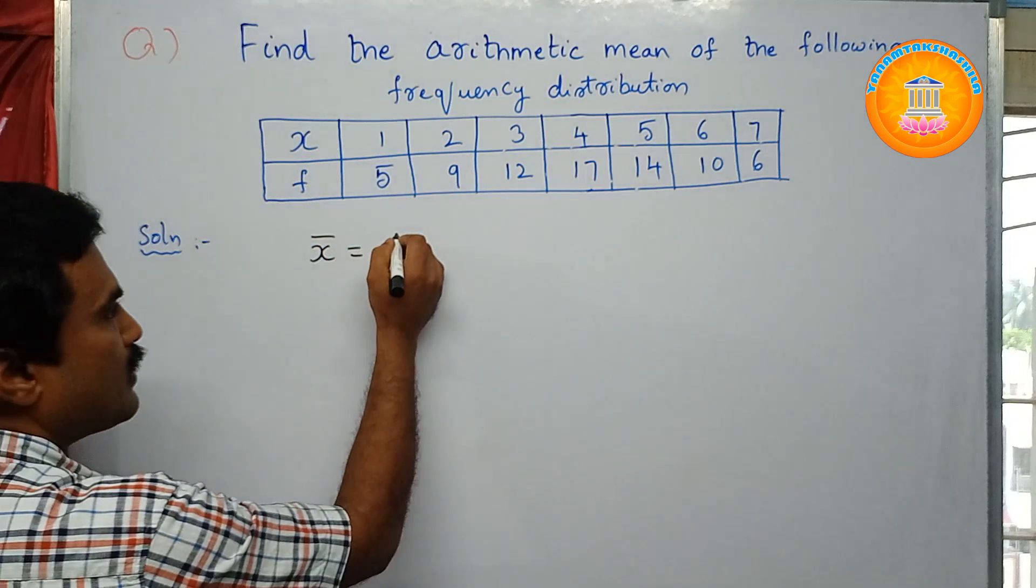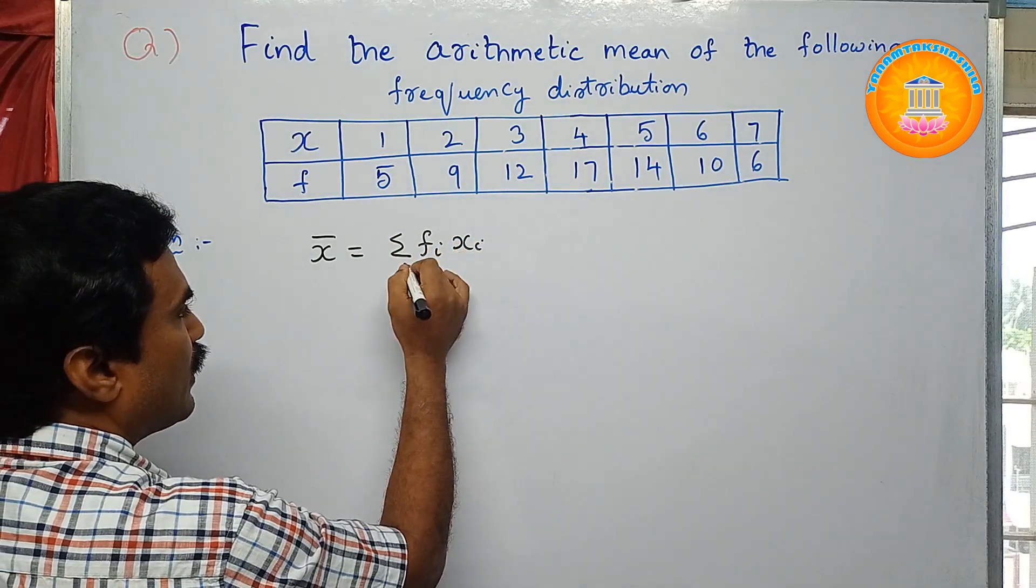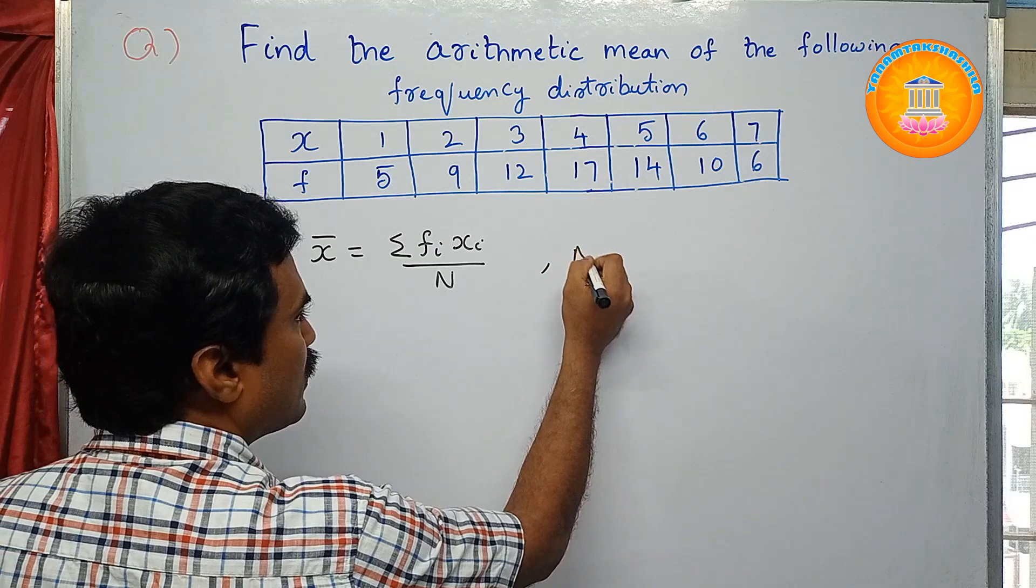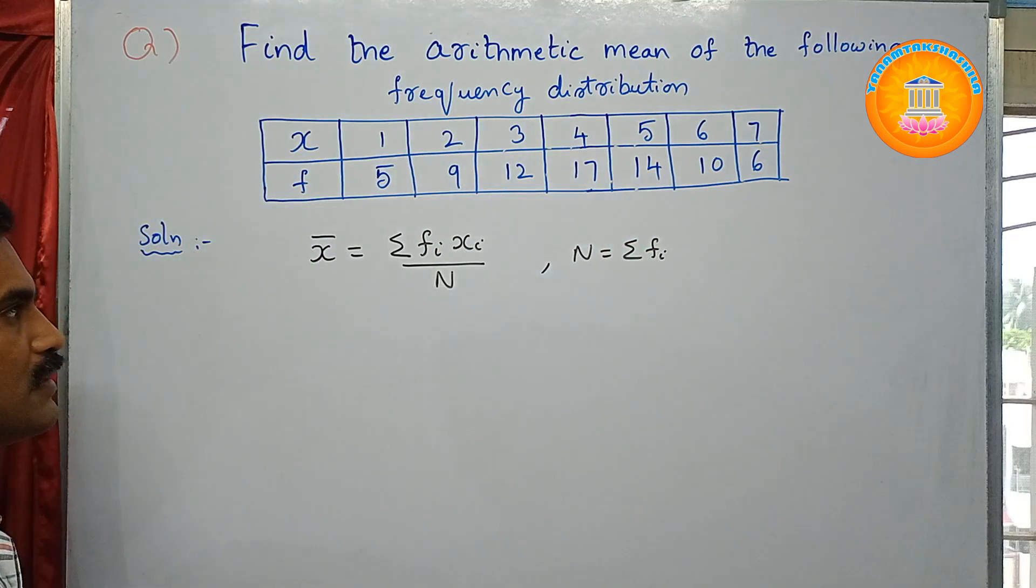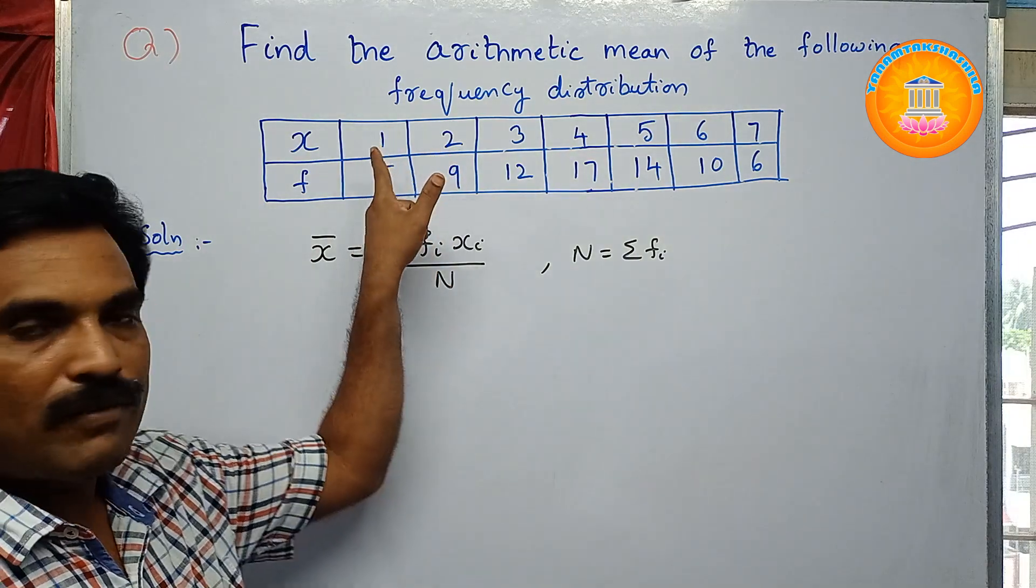So X bar equals the formula Sigma f_i times x_i divided by n, where n is Sigma f_i, that is sum of all frequencies. What you have to do is multiply this X value, that is x_i into f_i, and you have to add all these values.